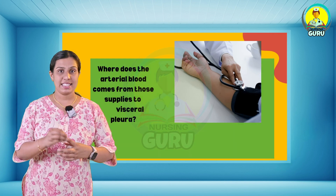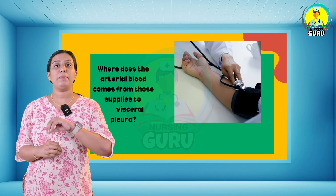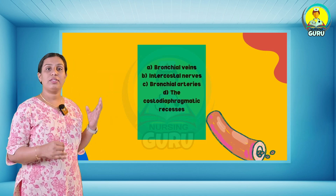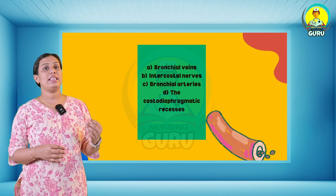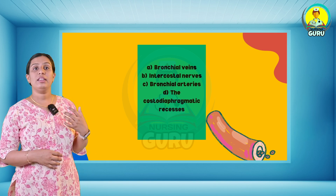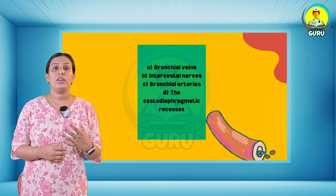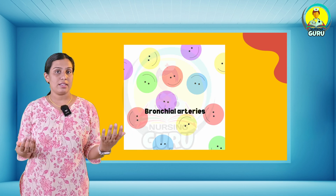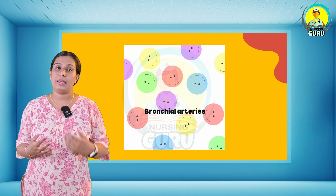Ninth question: where does the arterial blood come from that supplies the visceral pleura? Four options: bronchial vein, intercostal vein, bronchial arteries, and caudal diaphragmatic arteries. The answer is option C — bronchial arteries.